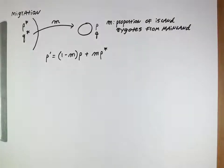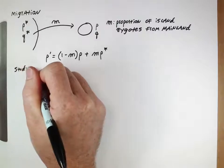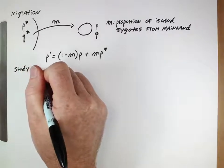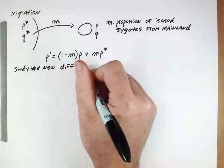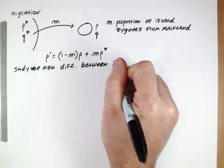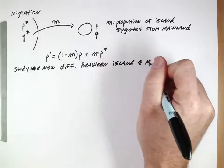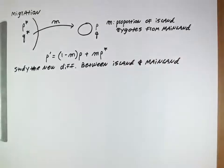We're going to derive an equation that tells us how the frequency on the island changes due to migration. We'll start in a slightly awkward way, but it will give us a clean final equation. We're going to study the new difference between the island frequency and the mainland frequency — this approach is chosen to make the math work out well.